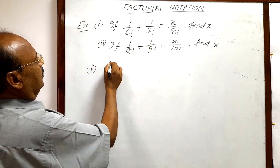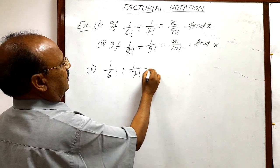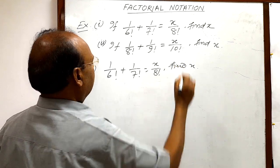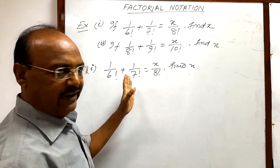Here first question is 1 upon 6 factorial plus 1 upon 7 factorial is equal to x by 8 factorial. We have to find out the value of x. So this one is very simple, we can do it very easily.